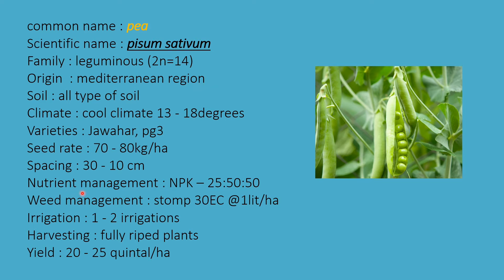Nutrient management is NPK 25:50:50; phosphorus and potassium are applied in basal doses. Weed management uses STOMP 30 EC at 1 liter per hectare. Irrigation: 1 to 2 irrigations for the entire crop. Harvesting when fully ripened. Yield is 20 to 25 quintals per hectare.